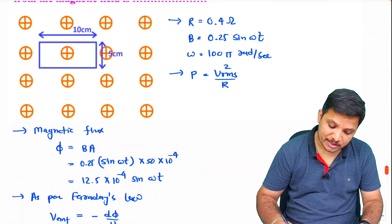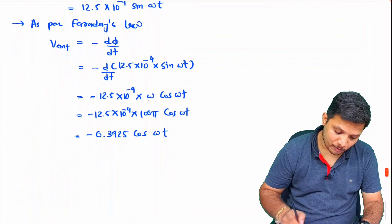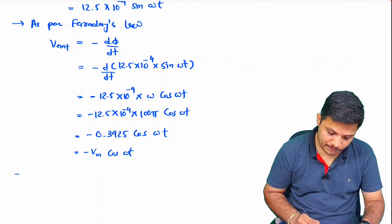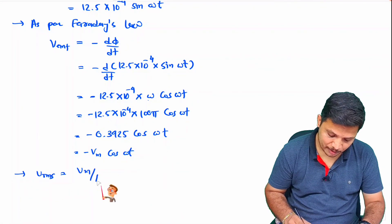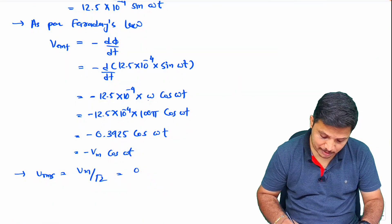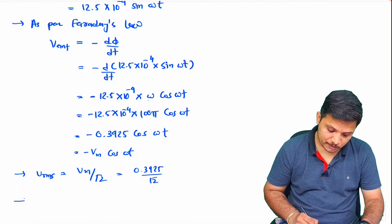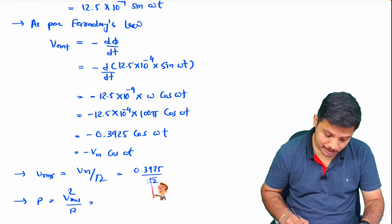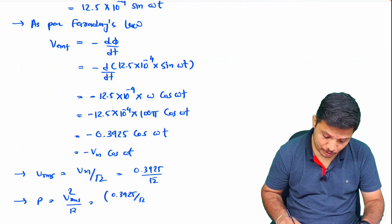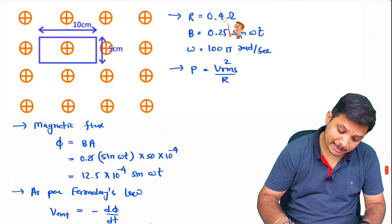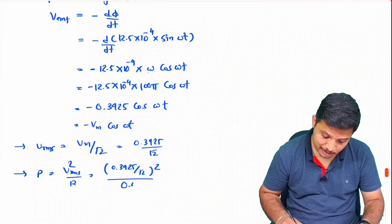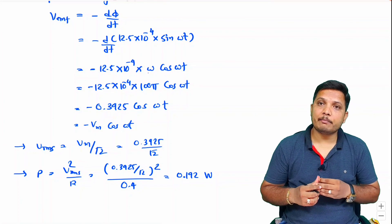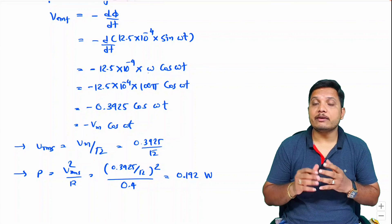Now, power dissipation is V_RMS squared divided by R. We have V_max from the expression. Comparing with V_m cos(ωt), V_m is 0.3925, so V_RMS = V_m divided by root 2 = 0.3925 / √2. Therefore, power dissipated across the loop is V_RMS squared divided by resistance: (0.3925 / √2)² divided by 0.4 Ohm, which gives 0.192 Watt. This is how we identify power dissipated across the loop using Faraday's law of magnetic induction.